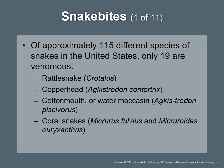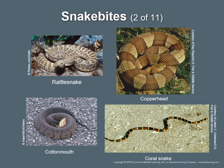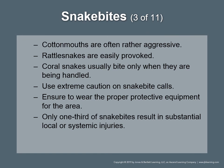Snakebites: fatalities from snakebites in the United States are extremely rare. Of approximately 115 species of snakes in the U.S., only 19 are venomous, including the rattlesnake, copperhead, cottonmouth or water moccasin, and coral snakes. Cottonmouths are often aggressive; rattlesnakes are easily provoked; coral snakes usually bite only when handled. Use extreme caution on snakebite calls as another snake may be present — wear proper protective equipment. The amount of toxin injected is directly related to toxicity. Only one-third of snakebites result in substantial local or systemic injuries.